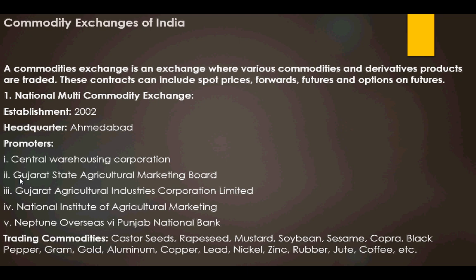The commodities traded on the NMCE platform include castor seed, grape seed, mustard, soybean, sisal, copra, black pepper, gram, gold, aluminium, copper, lead, jute, coffee, rubber, zinc, nickel, and others.